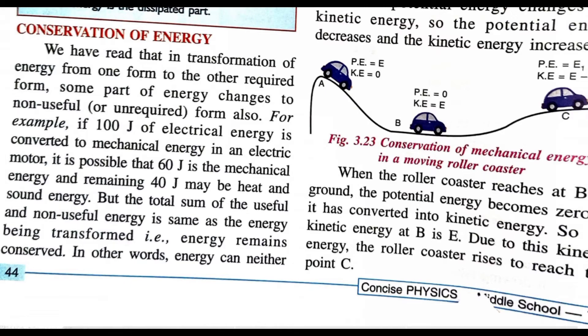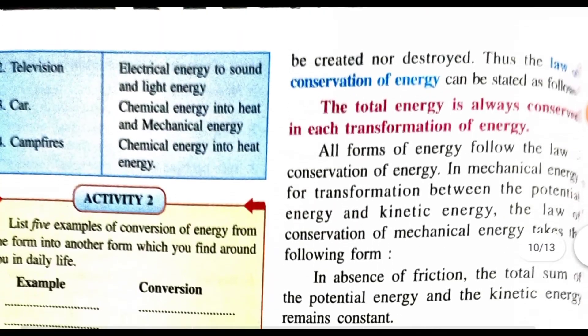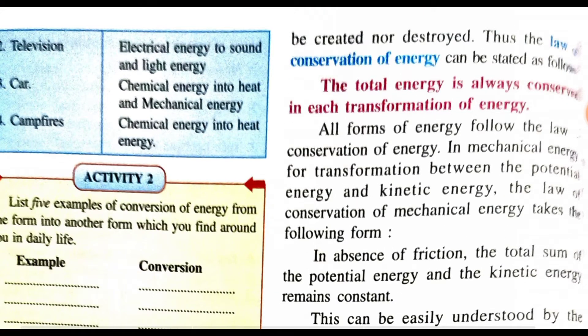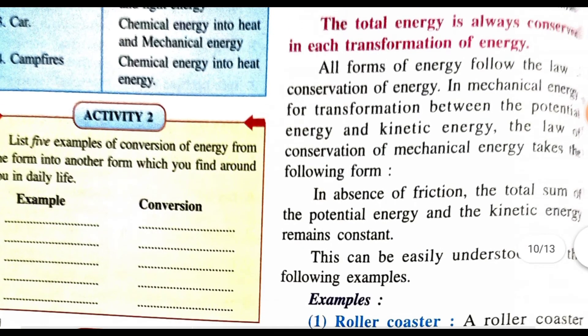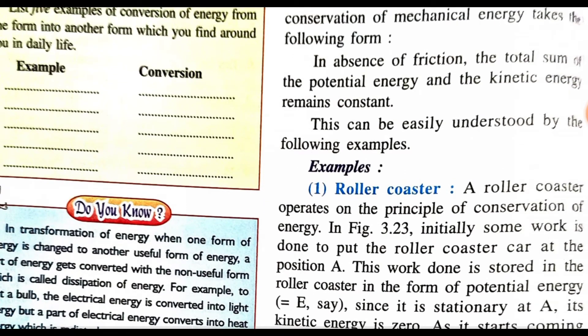Energy remains conserved. In other words, energy can neither be destroyed nor created — this is the law of conservation of energy. The total energy always remains constant; it just transforms from one form to another. All forms of energy follow the law of conservation of energy. In the transformation between potential energy and kinetic energy, the law of conservation of mechanical energy states that in the absence of friction, the total sum of potential energy and kinetic energy remains constant.